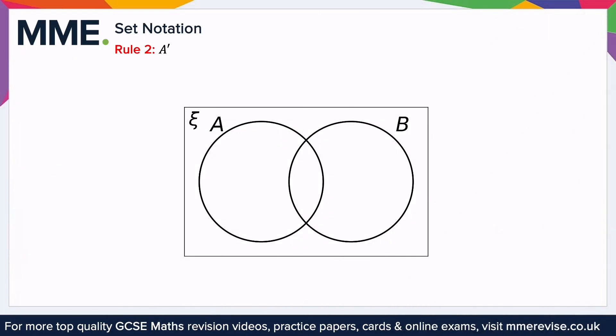A dash means everything that is not in A. The easy way to see this is if we decide that our set space is the numbers between 1 and 10, and we decide that A is the numbers 1, 2, and 3, then A dash would be all of the numbers between 1 and 10, except 1, 2, and 3.